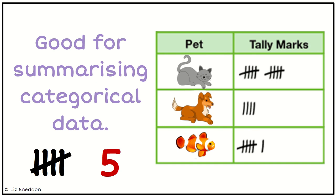So that means for the example there, for the cats, there's two blocks of five, so there would be 10 pet cats. For the dog, there's four, and for the fish, there are six.